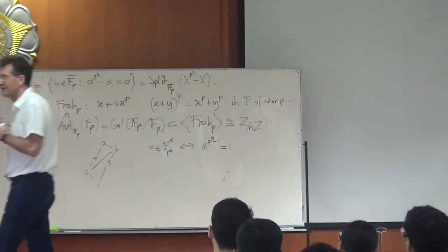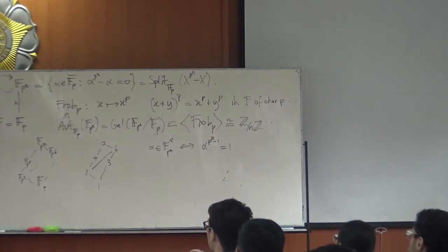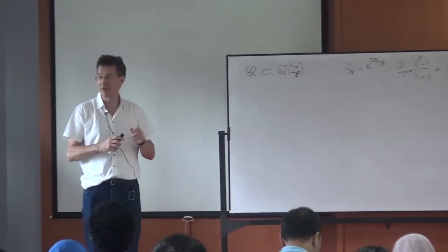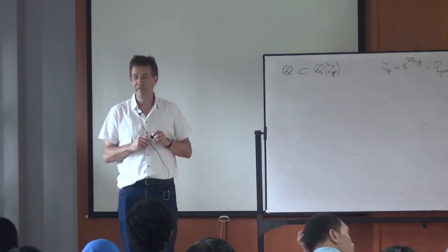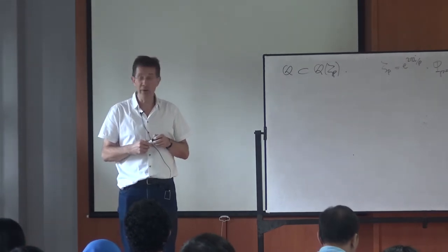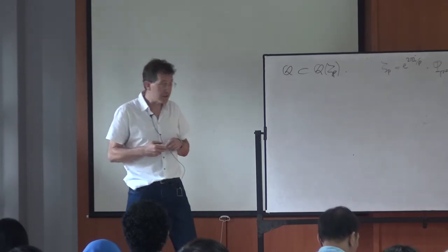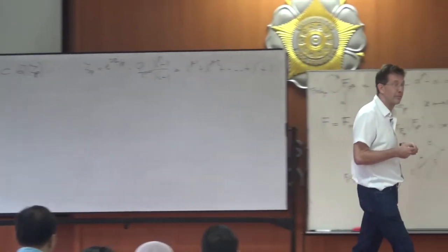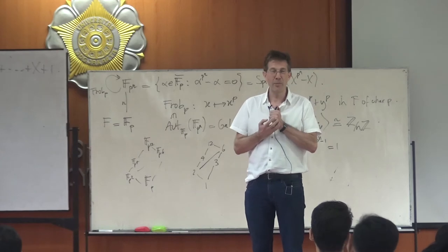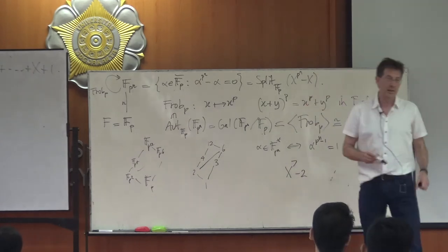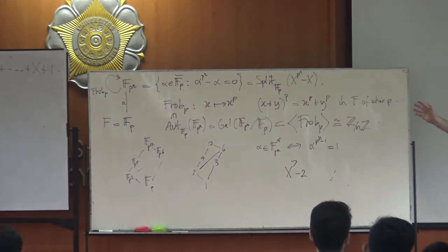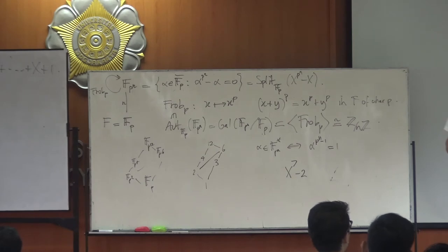Apparently Gauss spends two pages proving irreducibility of Φ_p. We won't follow Gauss — instead we use the Eisenstein criterion. A polynomial is Eisenstein at p if, when reduced mod p, only the leading term survives (all other coefficients divisible by p), and additionally the constant coefficient is divisible by p but not by p². For example, x⁷ − 2 is Eisenstein at 2.